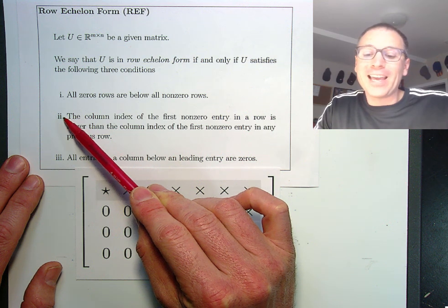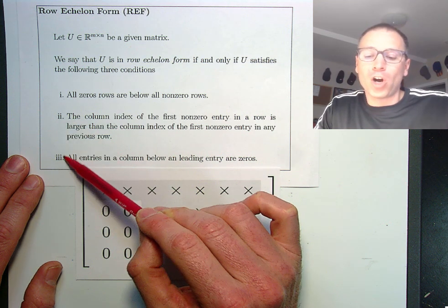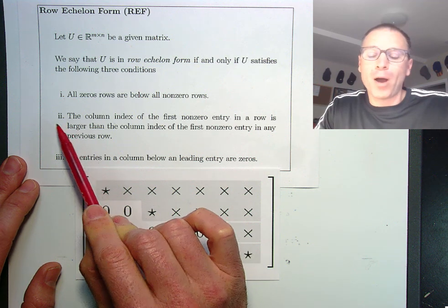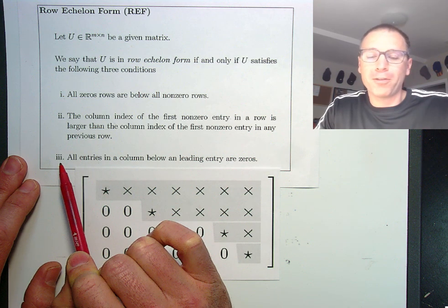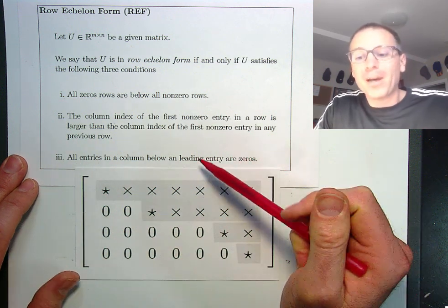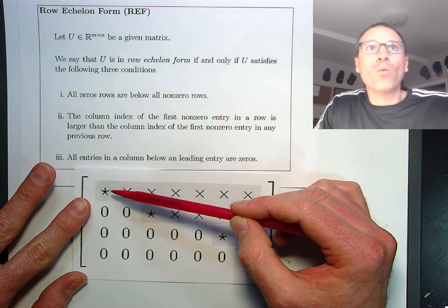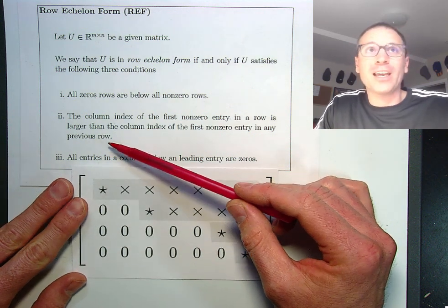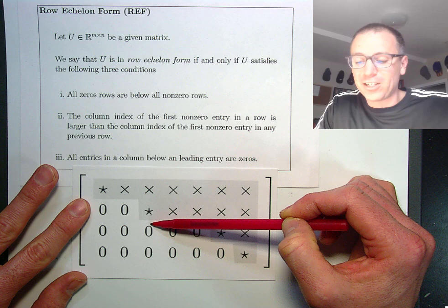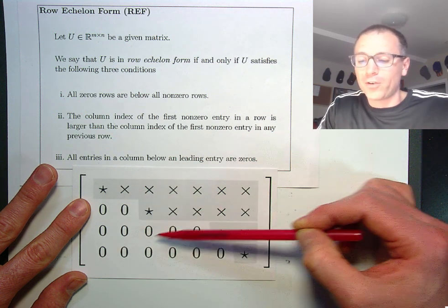Now, I had a very astute student once say, hey, these two properties are redundant. And specifically, property two implies property three. I agree with that, but it's useful to remember that one way to check is to look for the staircase and the other way to check is to look under each leading entry and just make sure everything under those are all zero.